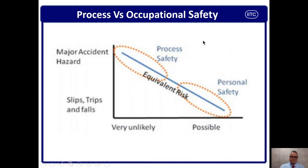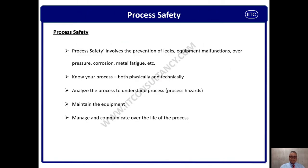If you are going through this video and have any questions or suggestions, please participate in the comment section so we can come back to you on an ASAP basis. Process safety involves the prevention of leaks, equipment malfunction, over-pressure, corrosion, and metal fatigue. It deals with process characteristics of pressure, temperature, flow, and level. We must know the processes both physically and technically to understand complete process safety management.